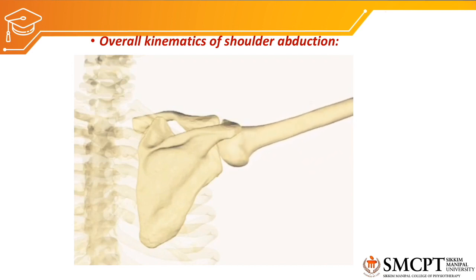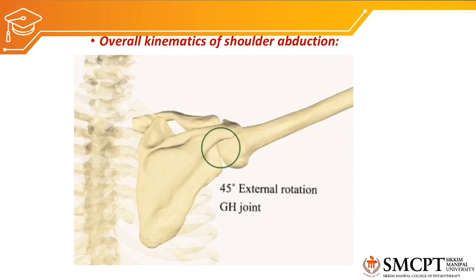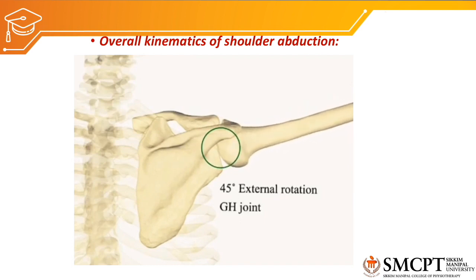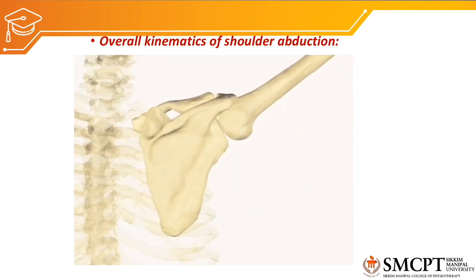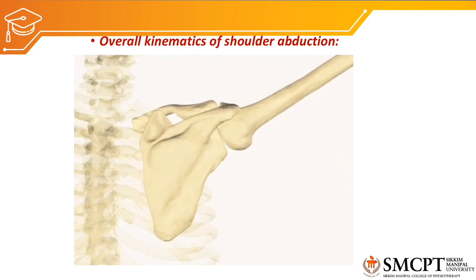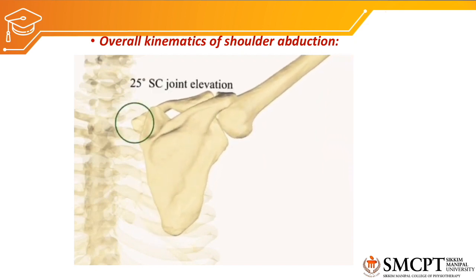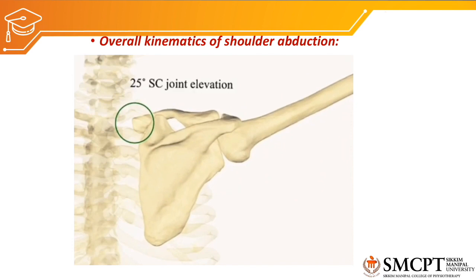There is about 45 degrees of external rotation at the glenohumeral joint along with this 120 degrees of glenohumeral abduction. Because of this external rotation, the greater tubercle gets cleared from the acromioclavicular joint, therefore there will be a slight decrease in restriction of movement. Now, along with 120 degrees of abduction and 45 degrees of external rotation at the glenohumeral joint, if the clavicle elevates there will be more range of motion. There is about 25 degrees of clavicle elevation at the sternoclavicular joint which contributes to the overall abduction.